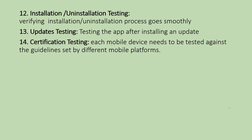Next is Installation and Uninstallation Testing — we verify that the app can be installed and uninstalled without issues, and that this process is smooth for the user. Next is Update Testing — if there are new updates, you verify that the app updates correctly using app store updates. Next is Certification Testing — mobile platforms have guidelines or rules. If you want to publish an app, you need to verify that the app follows those guidelines.